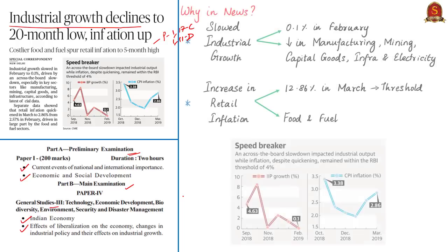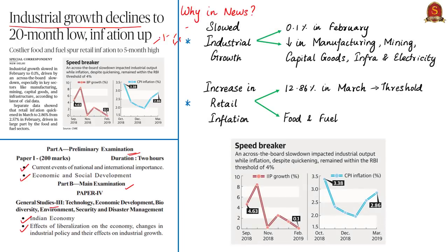Stepping into the main discussion, official fiscal data highlights that industrial growth slowed in February to 0.1%. This was driven by an across-the-board slowdown, especially in key sectors like manufacturing, mining, capital goods and infrastructure. Unlike other sectors, the electricity sector was the only sector that saw an acceleration in growth at 1.18% in February.